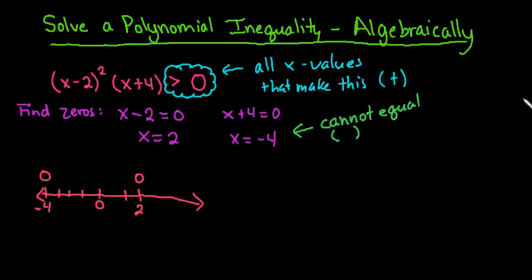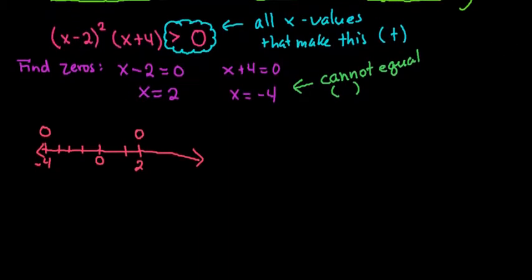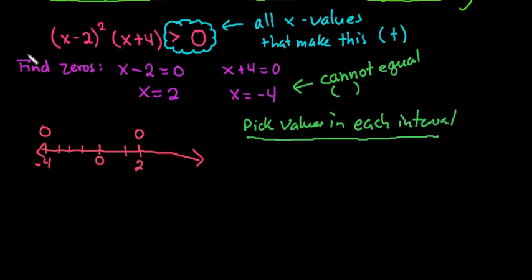I'm just going to put an open circle to help remind us that it cannot equal these. The easiest way to do this algebraically is to just pick numbers in each of the intervals. I'm going to set it up in table form just because it's the easiest way to do it.